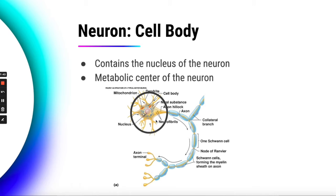Since neurons can't do mitosis, they would not need centrioles. This is basically the metabolic center of the neuron where you have mitochondria making energy and carrying out different chemical reactions to keep the cell alive.